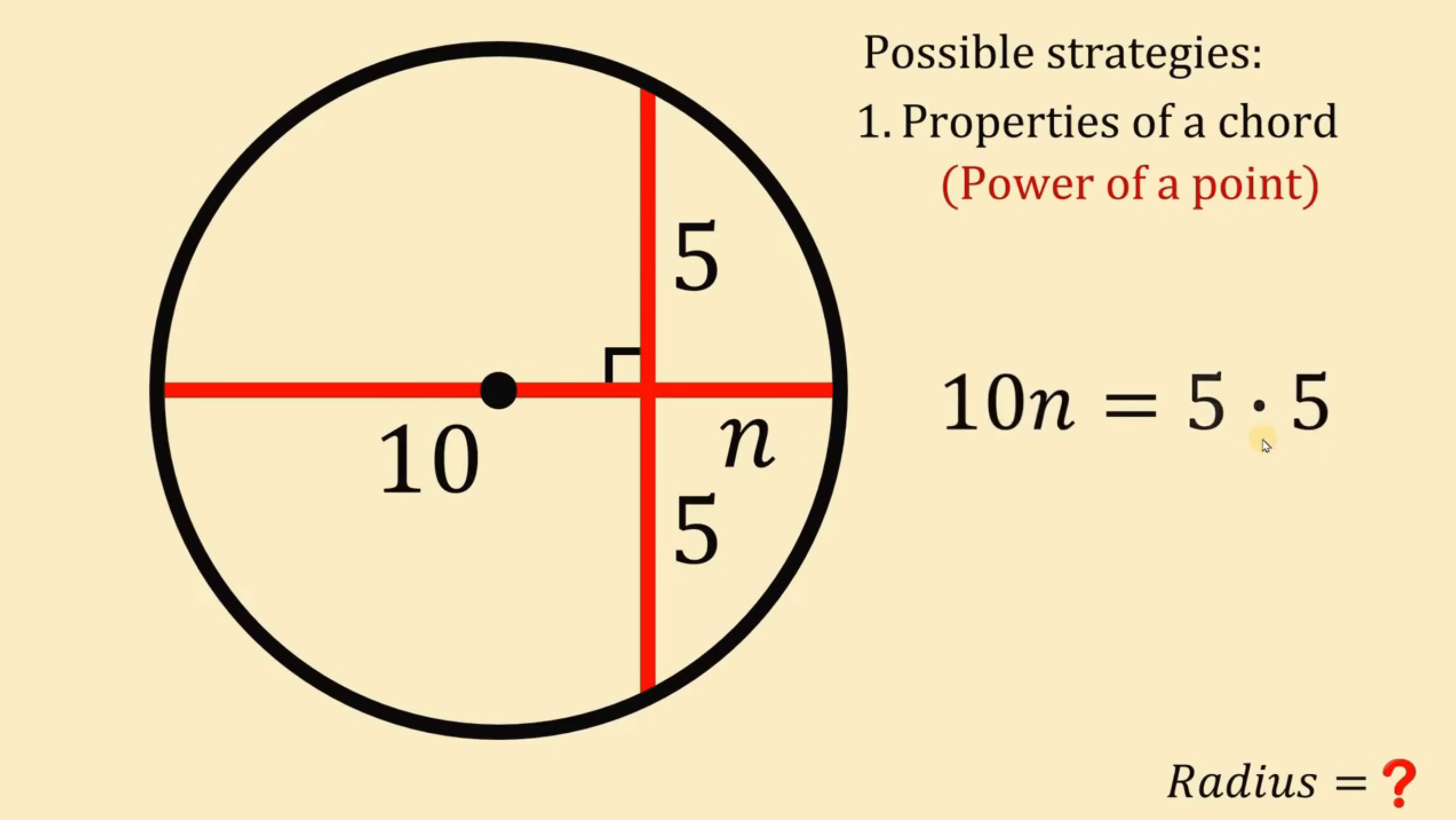And to solve for the value of N, let's divide both sides by 10. So N is equal to 25 over 10 and 25 over 10 is just 2.5. So we get that the value of this N, this variable N or this length right here is just 2.5.